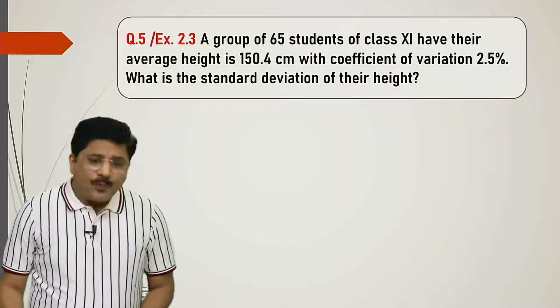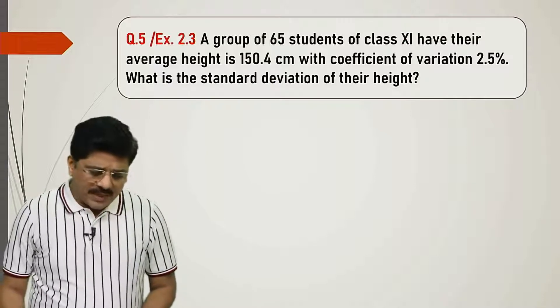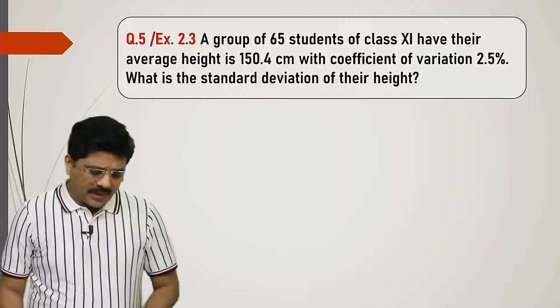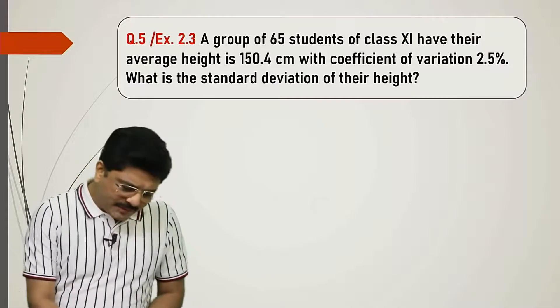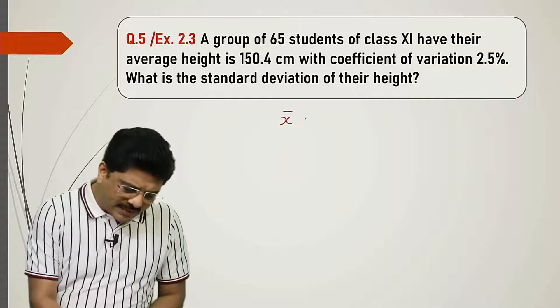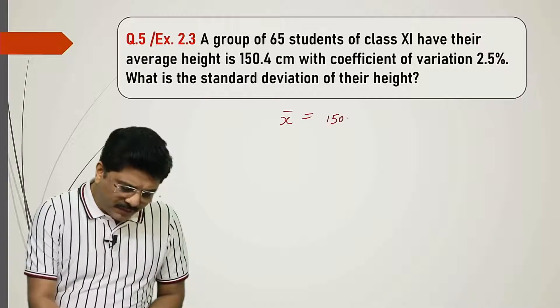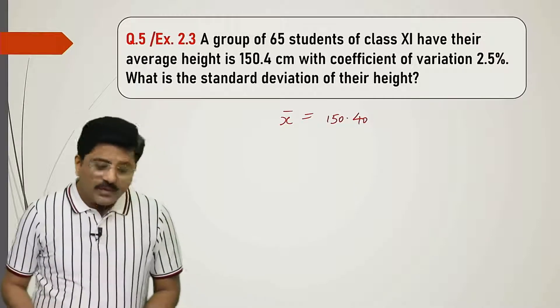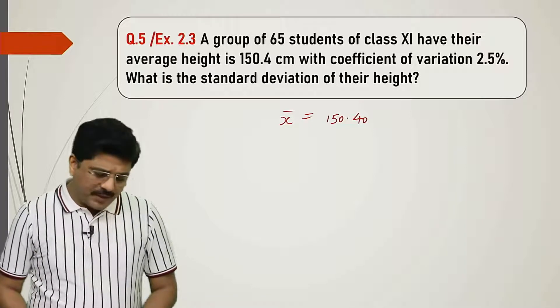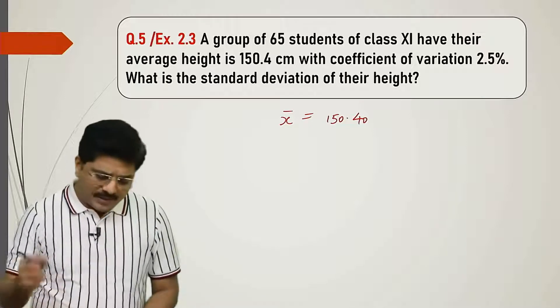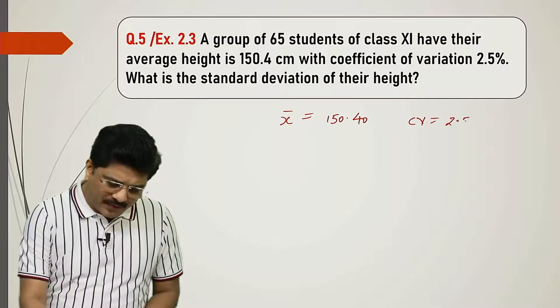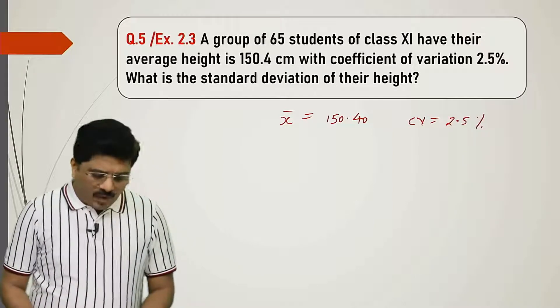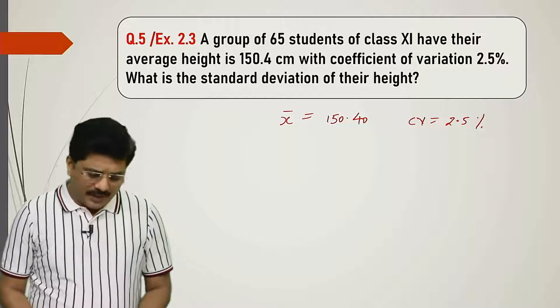A group of 65 students of class 11 have their average height 150.4. So what gives us average height? X bar gives 150.4 with coefficient of variation 2.5%. CV gives us 2.5%. What is the standard deviation of their height?